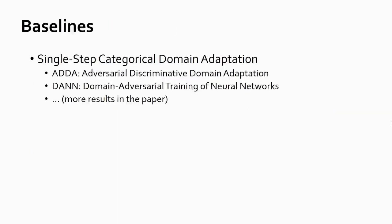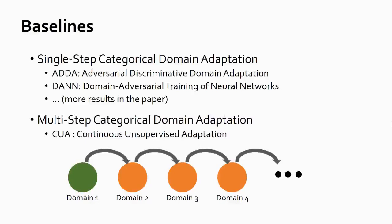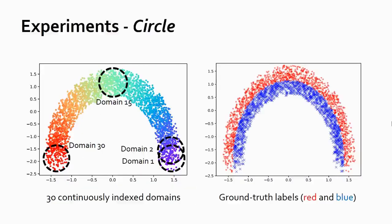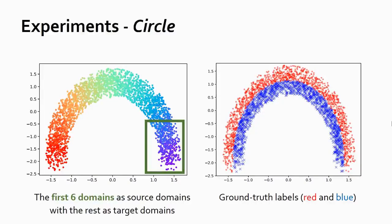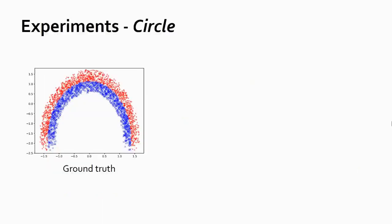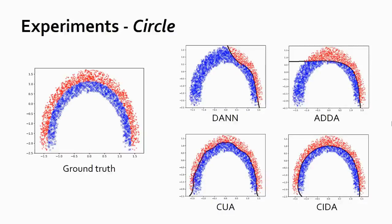For the experiments, we use the following state-of-the-art categorical domain adaptation methods as baselines. We use single-step methods such as ADA and DANN, and a multi-step method, CUA, which is a simple way to augment categorical domain adaptation and incrementally perform adaptation one domain after another. Let's come back to the toy dataset to see how these methods perform. Recall that we have 30 continuously indexed domains. We use the first six domains as source domains, and the rest as target domains. These are the results for categorical domain adaptation methods, and our CIDA. We can see that CIDA successfully learns how the data distribution continuously evolves with the domain index, and adapts from source domains to target domains.